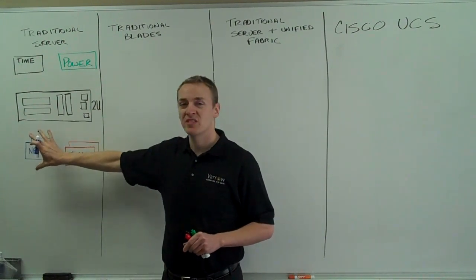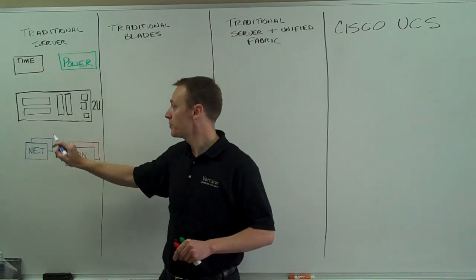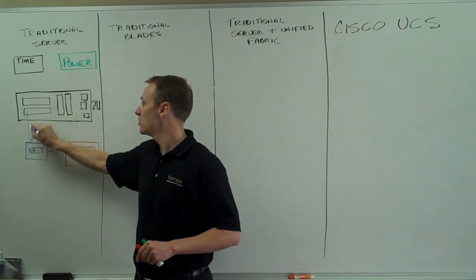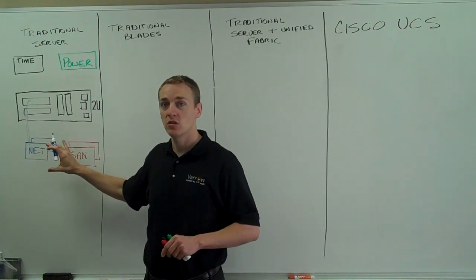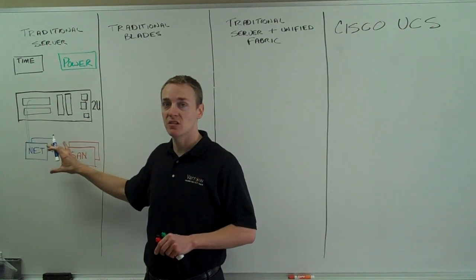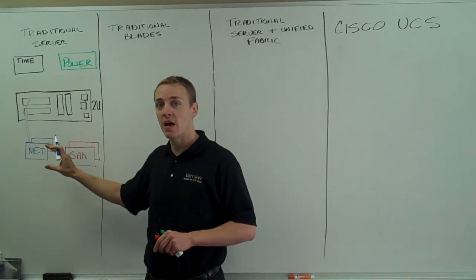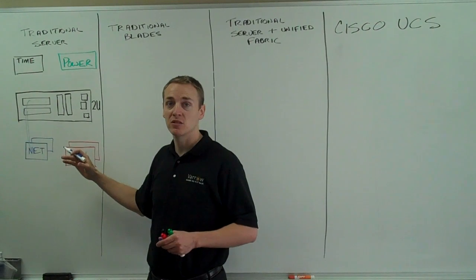Let's first talk about how we design the network for an ESX host. I'm going to connect two ports into the network, one gigabit each, for my service console. So this is for the management of this ESX host. These should be separated out and managed for best practices of security.